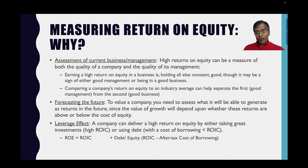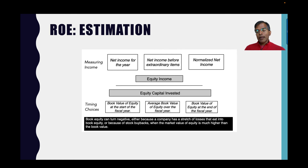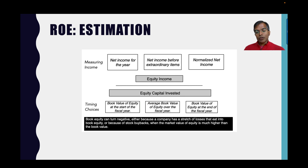People look at return on equity for lots of different reasons, and that's why I've created this data set with returns on equity. There are choices I had to make in computing return on equity. First, on net income, I had to decide whether to use the actual reported net income, net income before extraordinary items, or normalize net income by averaging across time. For book equity, I could take it at the start of the period, the end of the period, or average over the period. I've stayed consistent over the 30 years I've been reporting this number: I use net income as reported — after extraordinary items — and book equity at the start of the fiscal year, dividing the net income from the last 12 months by the book value of equity at the start of the fiscal year.